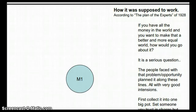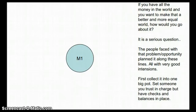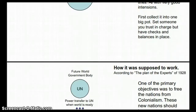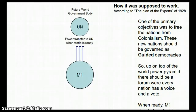How was it supposed to work? If you have all the money in the world and you want to make it a better, more equal world, how would you go about it? The people faced with this problem planned it along these lines, all with good intentions. First, collect everything into one big pot in Indonesia. Set someone you trust in charge with checks and balances in place. One of the primary objectives was to free nations from colonialism. These new nations should be governed by guided democracies, and at the top of the world pyramid, there should be a forum where every nation has a voice and a vote — that's how the UN was originally created.